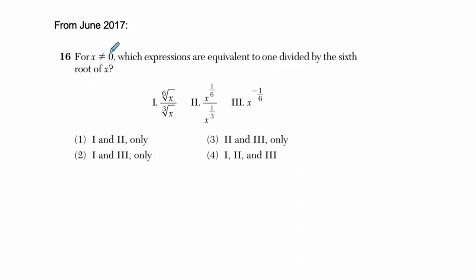Okay, so we're told here when x does not equal 0, which expressions are equivalent to 1 divided by the 6th root of x. X can't be 0 because we would be dividing by 0 in each case. They're just giving us a parameter here to work with.